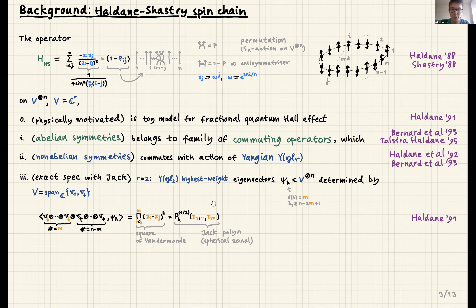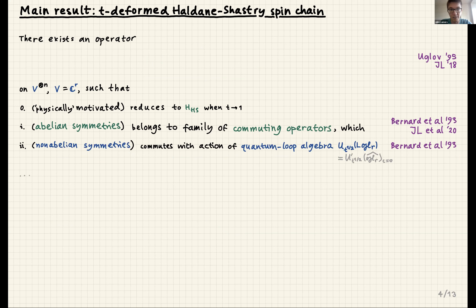All other components are of a similar form, differing only in the location of the down spins. This component completely determines the vector. Now, since we are at a conference on McDonald polynomials rather than Jack polynomials, let's go to the next level. The main result is that there exists a t-deformed Haldane-Shastri operator — an operator on the same space, physically motivated, that deforms this Hamiltonian. Sending the extra parameter t to 1 recovers the Haldane-Shastri operator. Moreover it still belongs to a family of commuting operators, and this family commutes with an action not of the Yangian but of the quantum loop algebra of GL_r.